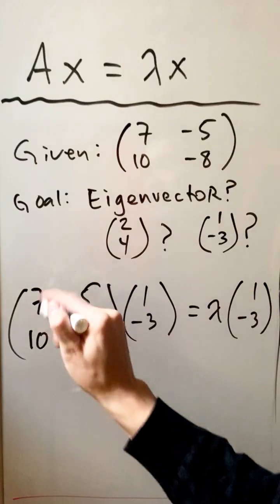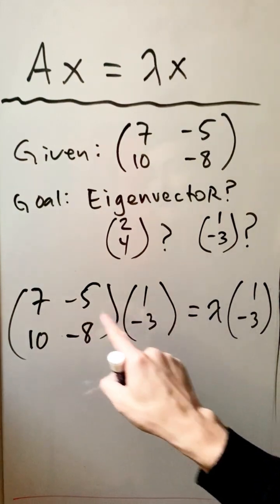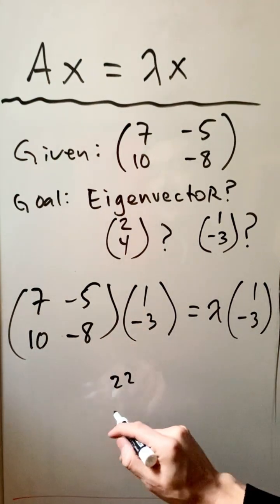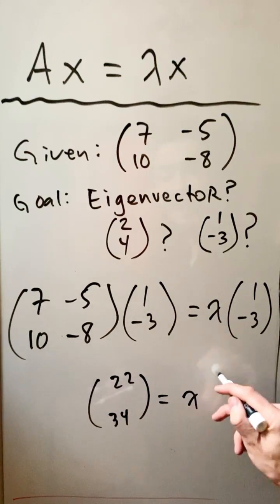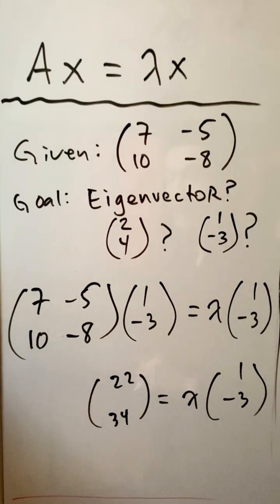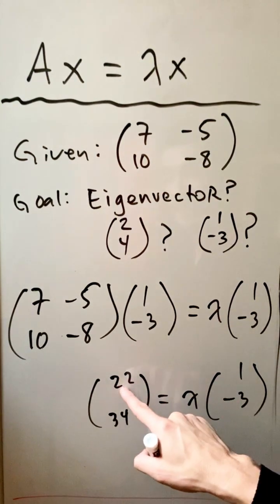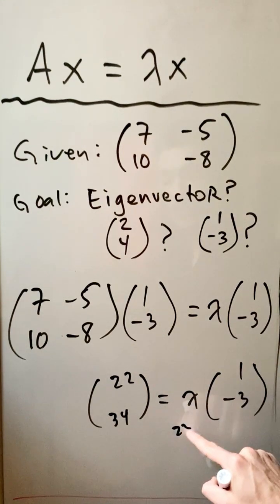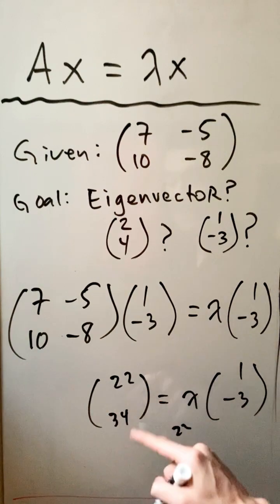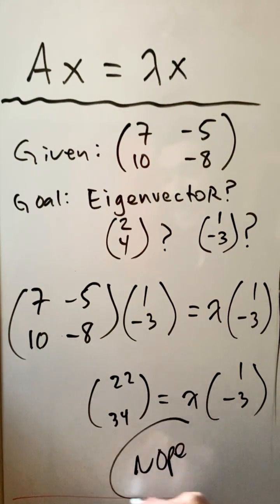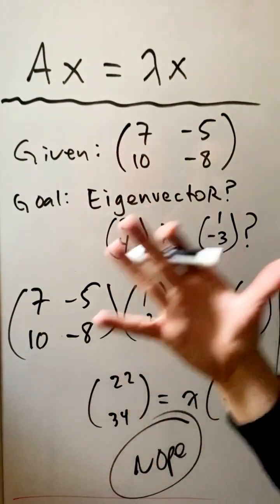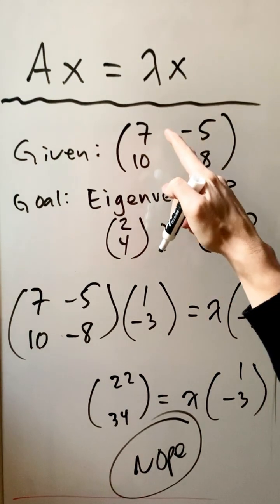Now let's test the next vector. Multiplying this row with the column: 7 plus 15 is 22. Then 10 plus 24 is 34. On the other side, we have lambda times the vector [1, negative 3]. Can you think of any number that if you distribute to both of these gives [22, 34]? The only way to get 22 from a 1 is for lambda to be 22, but 22 times negative 3 is not 34. There is no number that makes this happen. So this vector is not an eigenvector of this matrix.